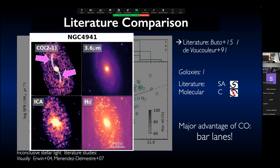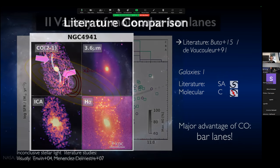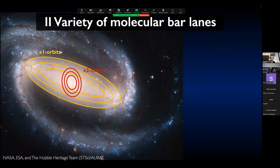This brings me to the second part of the talk: bar lanes, also often known as dust lanes. In a galaxy, bars are made up of elongated X1 orbits in the center, with more or less perpendicular X2 orbits. While stars more or less follow elliptical orbits, the gas gets shocked and funneled to the center along these orbits, and can accumulate in a ring in the center. This is why we have this offset in these dust or bar lanes, connecting with the ring in the center.